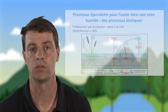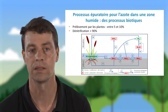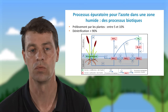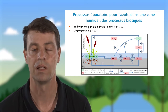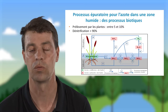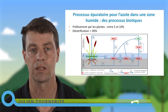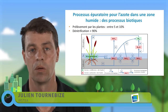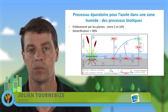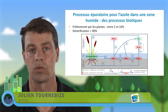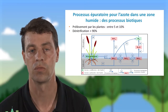En termes de processus épuratoires, le cycle de l'azote est complexe, mais nous privilégions deux processus principaux : le prélèvement par les plantes, avec une élimination estimée entre 5 et 10 % sur une période courte de production végétale, et le processus de dénitrification, qui est une consommation par les micro-organismes du nitrate, permettant d'éliminer jusqu'à 90 % de la pollution azotée.